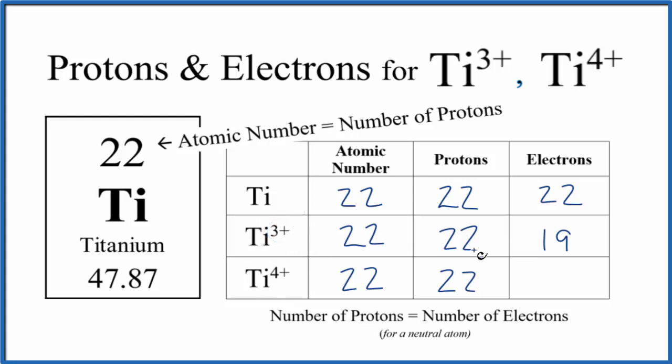For Ti4+, we have 18 electrons. The thing to understand is with the neutral atom and its ions, the only thing that's different is the electrons. If you need help finding the number of neutrons for the isotopes of titanium, there's a link in the description.